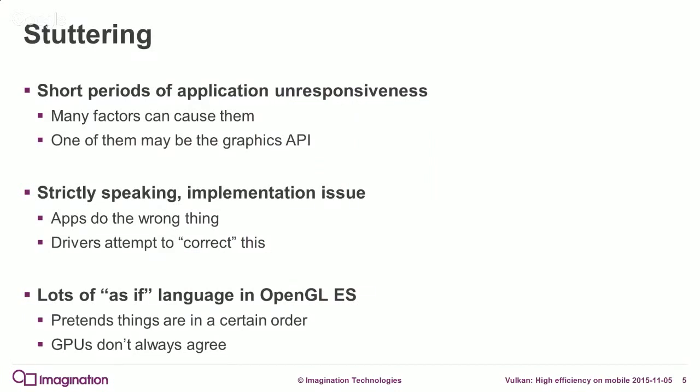Stuttering is short periods of application unresponsiveness. Whenever you're using an application and trying to input something and it just suddenly stops responding for half a second or whatever. There's a lot of things that can cause it, and unfortunately one of them can actually be the graphics API — or more strictly, implementations of that API. The API itself doesn't necessarily deliberately cause stutters, but because applications do the wrong thing, sometimes forced into that by the API, drivers try to correct it. There's a lot of ambiguity and implicit stuff within the OpenGL ES specification that lets drivers do this.